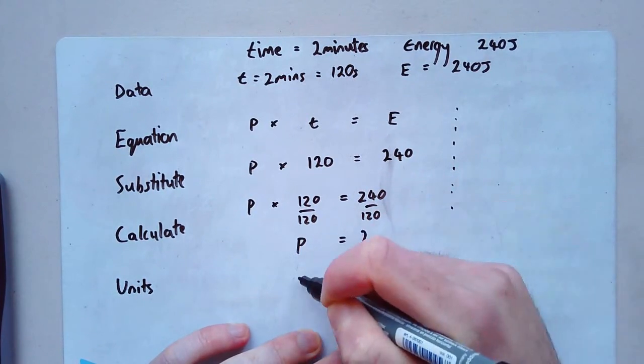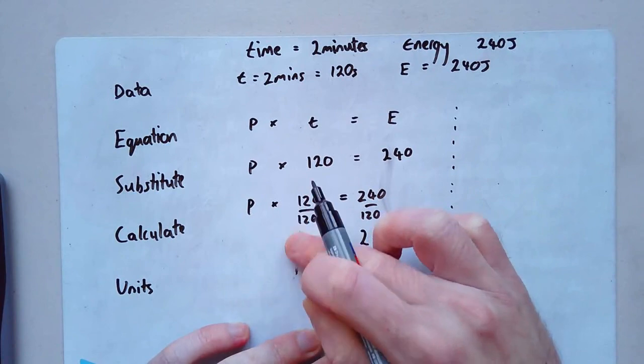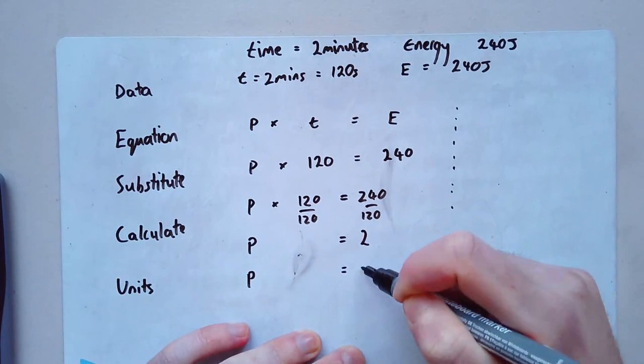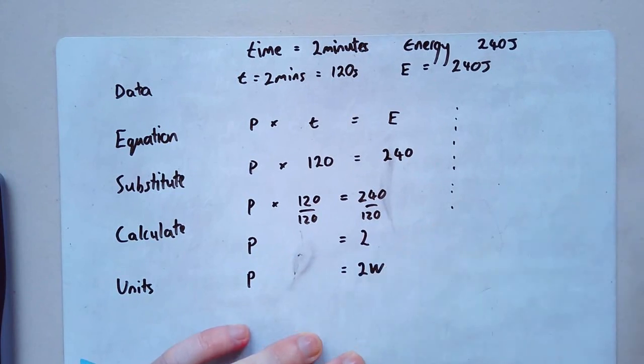I'll put P times 120 equals 240. I'll divide both sides by 120. And I'll get P equals two. And my units, I'll just write the P all the way over here. So it's really clear where I've got that P from. And I'll write the P again, equals two W, two watts. Very easy. Very straightforward. Let's try one more example.